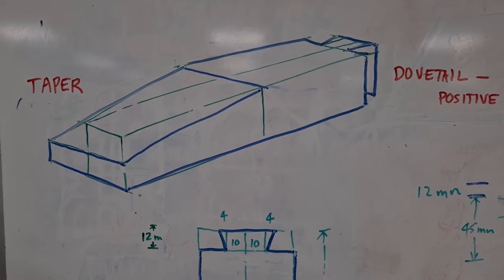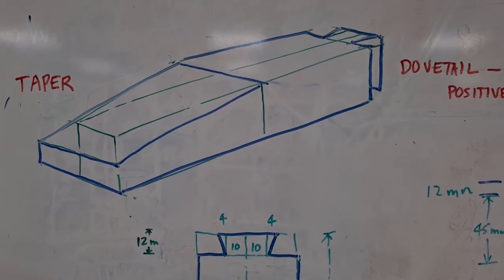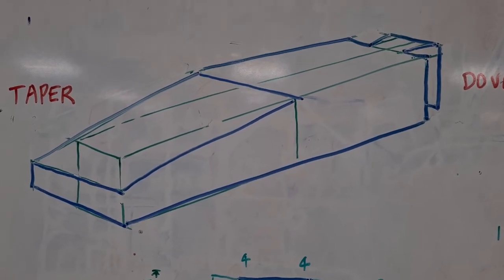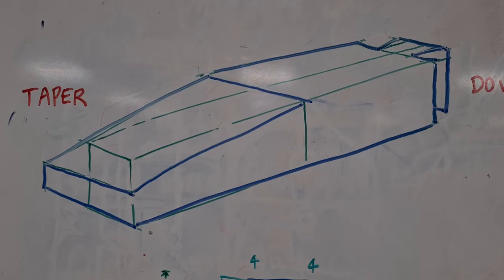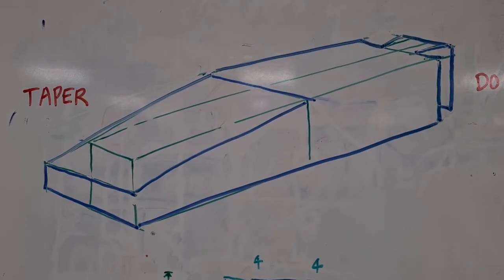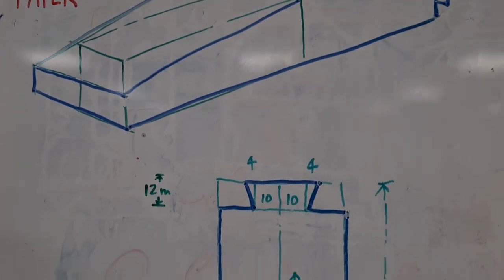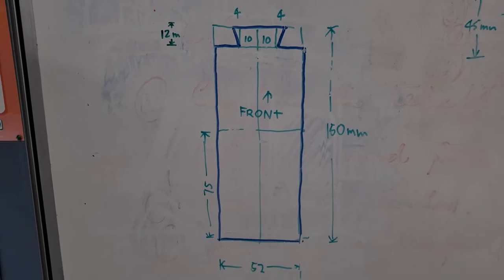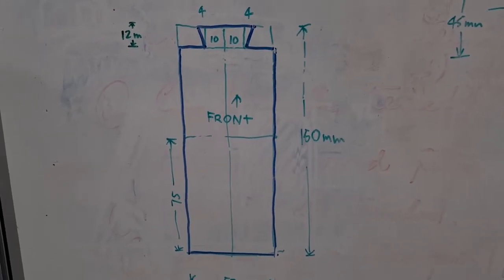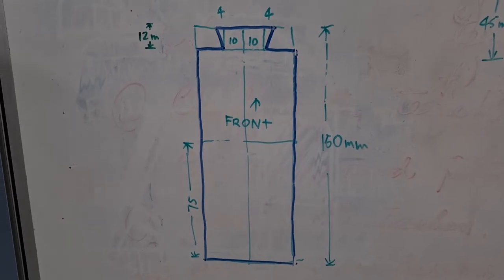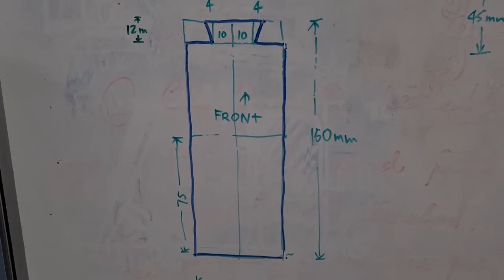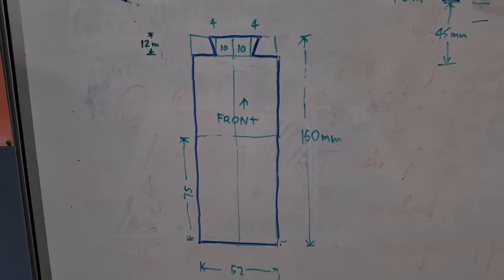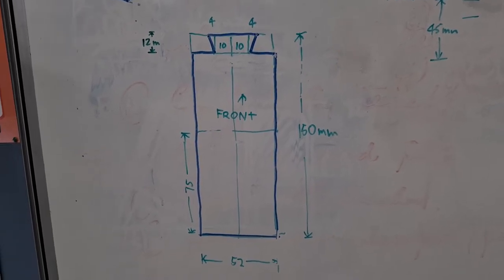This is a rear view of your base wedge and note here that the taper is cut down to half the thickness of the timber so half of 19mm is nine and a half millimetres. Again here's some more marking out with the construction lines in green and the outline of the base wedge are in blue. Note that the timber itself is 150 millimetres long and it's 52 millimetres wide.